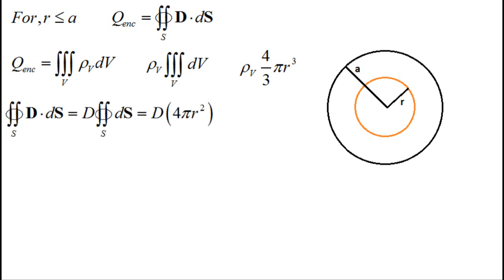As for the flux integral, we know that D will always be parallel to the surface normal vector. So we can pull D out of the integral and evaluate it. We can now plug this into Gauss's law and solve for D. We once again note that D will only have a radial component, so the direction is in the A sub r direction.